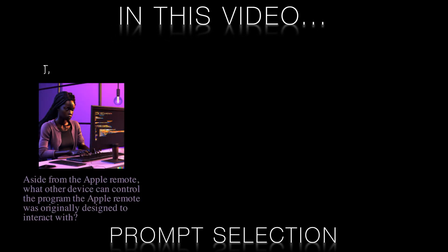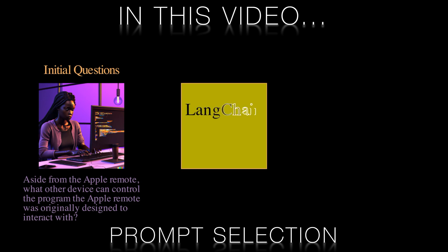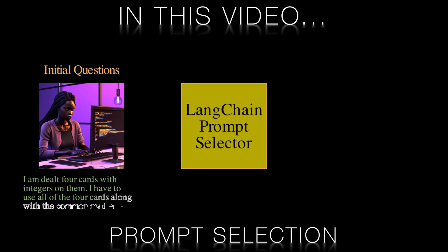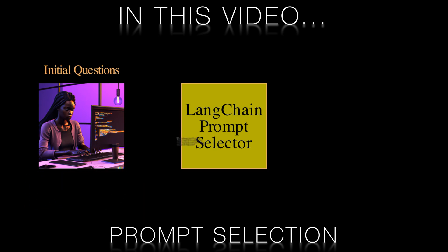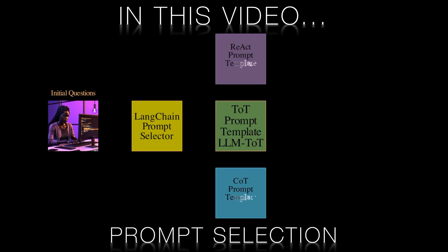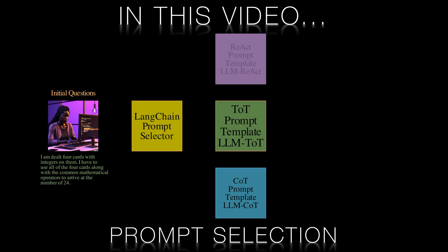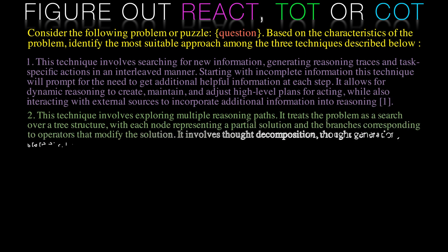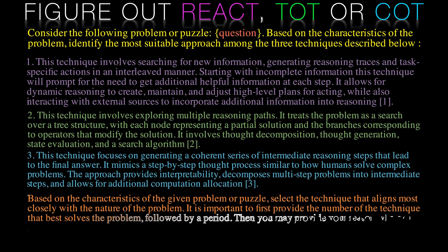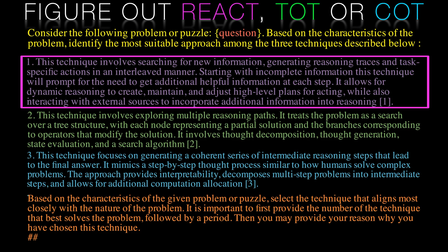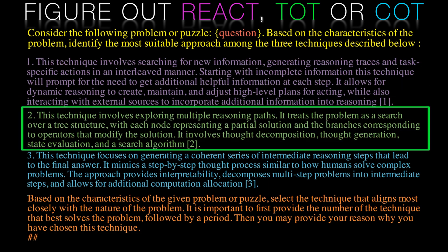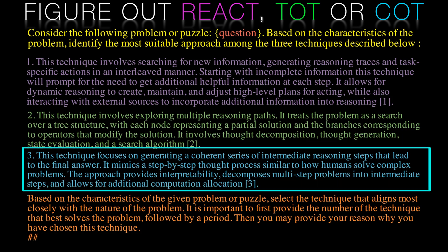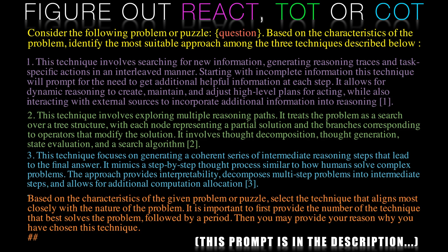For prompt selection, we're going to switch the architecture around. Our first LLM will be our prompt selector. Based on the type of question, problem, query, or puzzle thrown at it, it will determine the best strategy. You throw the problem at it and it figures out the right prompting technique to choose. We'll construct a prompt for this prompt selector — it's quite lengthy — and based on this, it will choose either a ReAct prompting technique, a tree of thoughts prompt, or a chain of thought prompt. The description contains this lengthy prompt so you can take it all in at your own time.